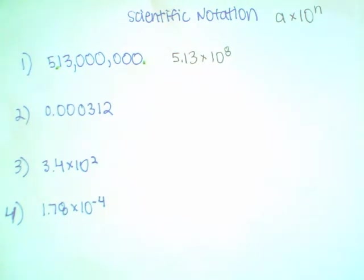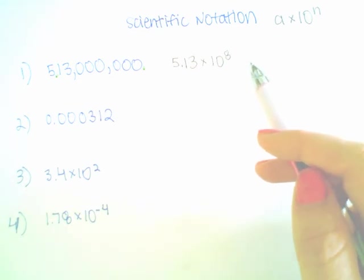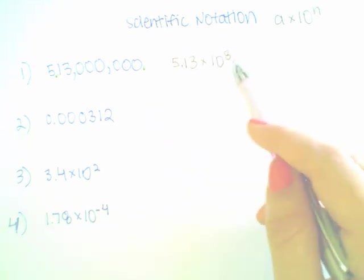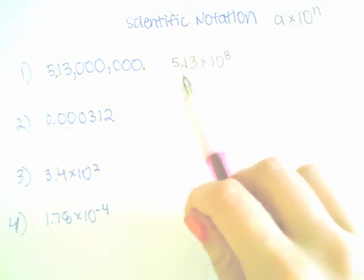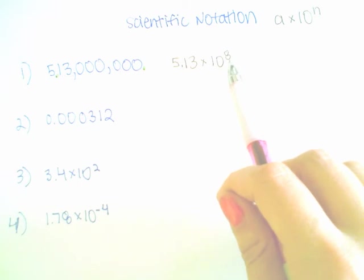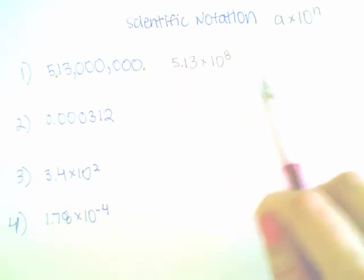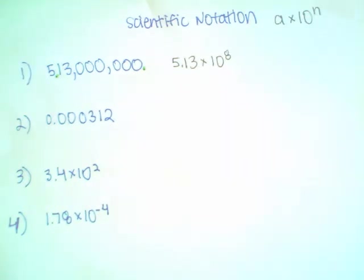Now we need to double check and make sure that we have the exponent correct. This exponent will be positive if our original number is greater than 1. 513 million is greater than 1, so it will be positive 8. You can always go back and check your work. If I were to move this decimal place 8 places to the right, it's positive so that would be 8 places to the right, I should have this number. Yes, I will have 6 zeros after 513.